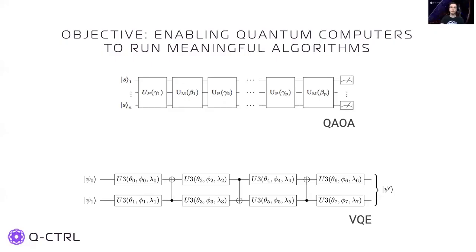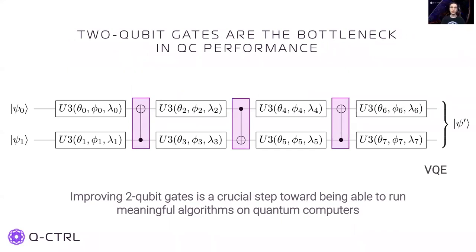Cloud accessible devices are becoming ubiquitous and easy to access. However, one of the most critical factors limiting the performance of quantum computers are its noisy gates. If we want to use quantum computers to solve meaningful problems, we need to reduce gate errors. Two qubit gates are the basic operation that generates entanglement between the qubits of a quantum computer and form the basic building blocks for more complex algorithms. You can see a sketch of the quantum circuit for the variational quantum eigensolver, also known as VQE. The errors introduced by faulty two qubit gates severely limit the current performance of the algorithm.